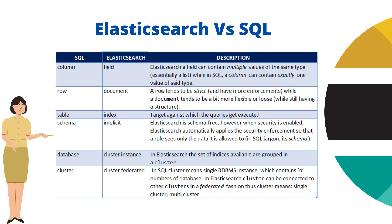So I hope this index video was clear to you. Index is a logical namespace which has a collection of JSON documents. This is all about index. In the coming lecture, we will see how to create an index and what things we need to take care of. In the next lecture, I am going to cover mapping — what is mapping in Elasticsearch?